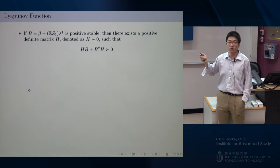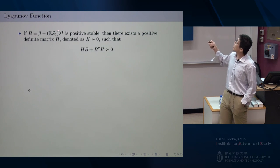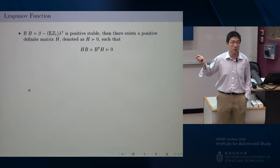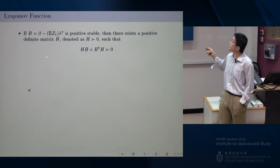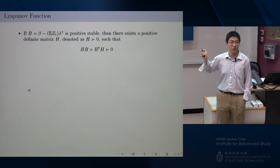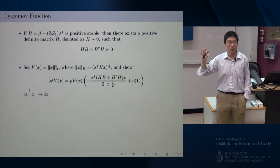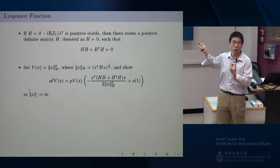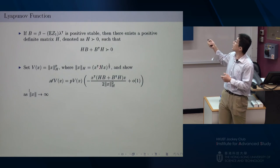Specifically, since the matrix beta-minus-jump-term is positively stable, there exists a positive definite matrix H such that the symmetrized product H times that matrix plus its transpose is also positive definite. I use this to construct the Lyapunov function V as the H-norm of x — essentially changing the coordinate system via the positive definite matrix H. This norm is equivalent to the Euclidean norm due to positive definiteness of H. When the norm of x is large enough, the drift term inside the inequality is negative, giving the required negative constant, which establishes the Lyapunov inequality.